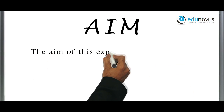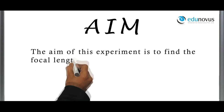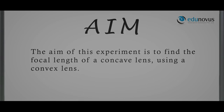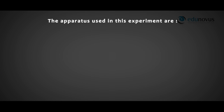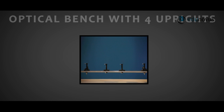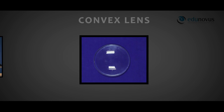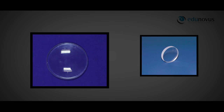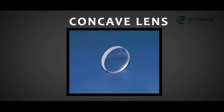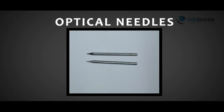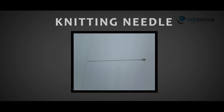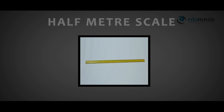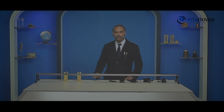Now you have a clear picture about the terms associated with the concave lens. The aim of this experiment is to find the focal length of a concave lens using a convex lens. The apparatus required are an optical bench with 4 uprights, a convex lens, a concave lens, two optical needles, a knitting needle, and a half meter scale.